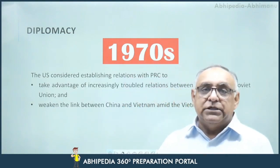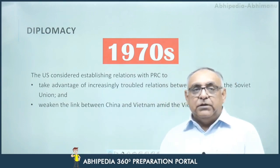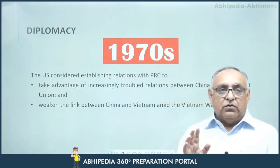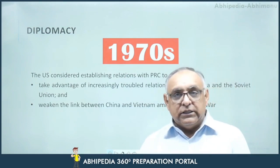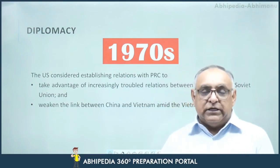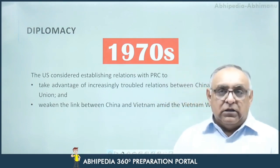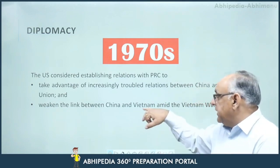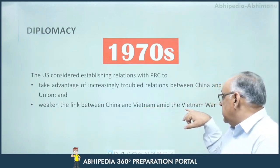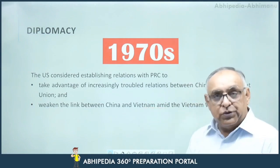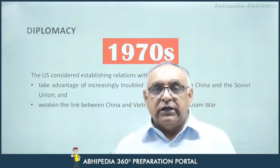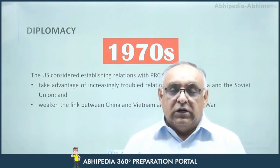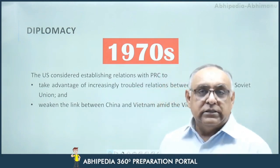Later in the 1970s, the U.S. considered establishing relations with the People's Republic of China. Why? To take advantage of the increasingly troubled relations between China and the Soviet Union at that time, and to weaken the link between China and Vietnam amid the Vietnam War. The Vietnam War started in 1955 and continued till 1975.